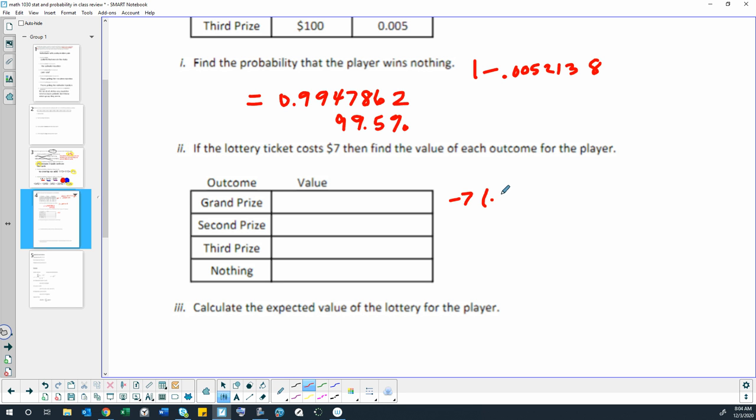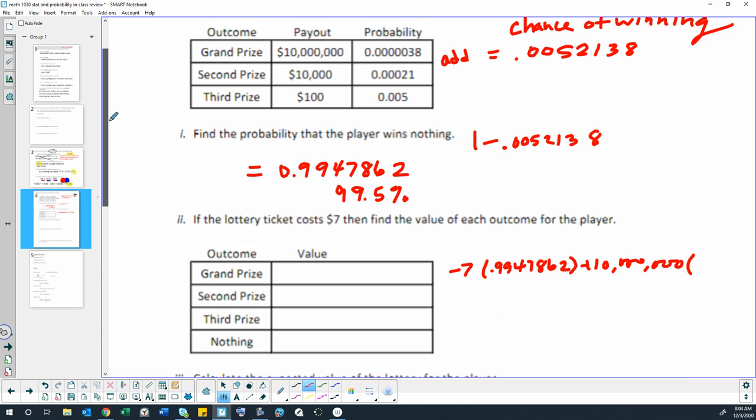There's a 99% chance that you'll lose that money. If you win the $10 million, there's only a 0.00000038 chance of that happening.